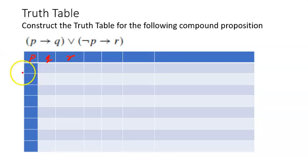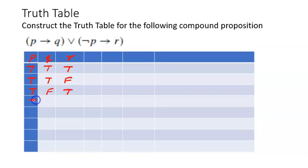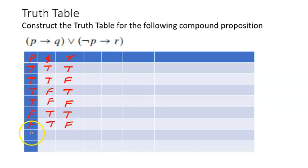P can take the truth values: true, true, true; true, true, false; true, false, true; true, false, false; false, true, true; false, true, false; false, false, true; and finally false, false, false. So these are the different values that P, Q and R will take.